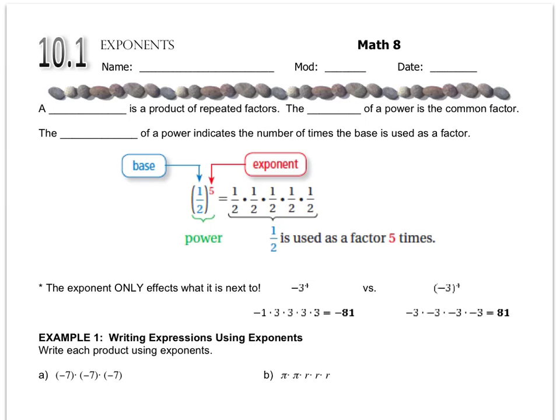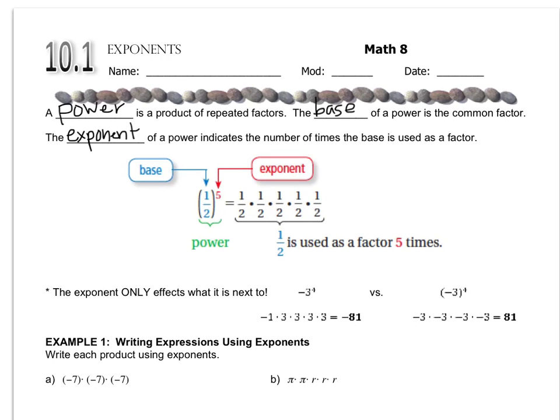A power is a product of repeated factors. The base of a power is the common factor. The exponent of a power indicates the number of times the base is used as a factor.